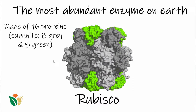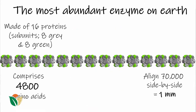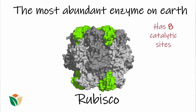This is the most abundant enzyme in the world, and for us it's also the most important. How big is Rubisco? If you lined up 70,000 Rubisco molecules side to side, they would spread just one millimeter. So proteins and enzymes are actually very, very small, even those which are quite large, like Rubisco.